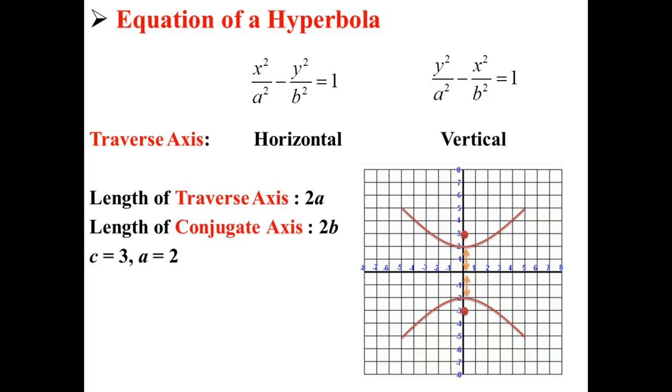Here our traverse axis is equal to 4, so our a is equal to 2, because the traverse axis is equal to 2 times a.